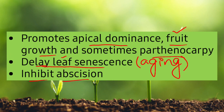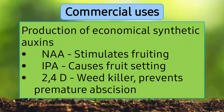Auxins also inhibit abscission. Abscission is the process of separating different parts of plants — for example, when leaves detach from trees and fall, or when fruits separate from plants. That is the abscission process. Auxins stop this process, or in other words, auxins strengthen the attachment of different plant parts.